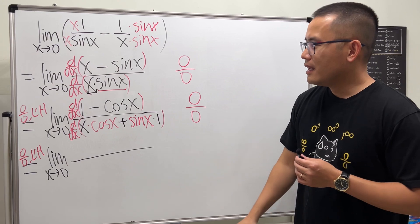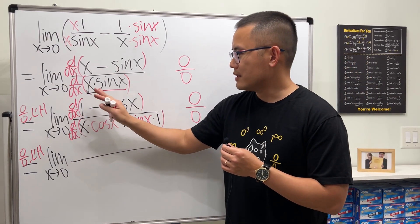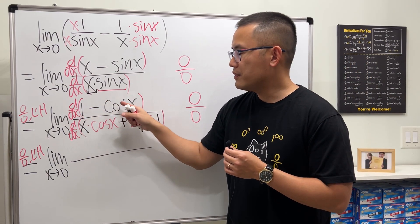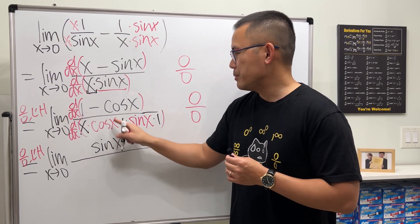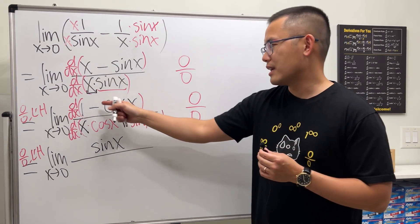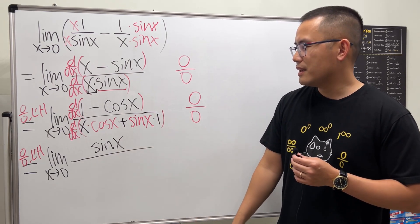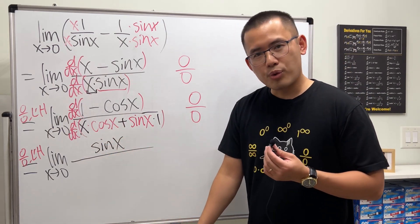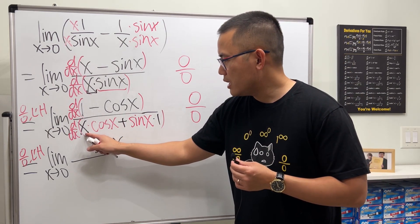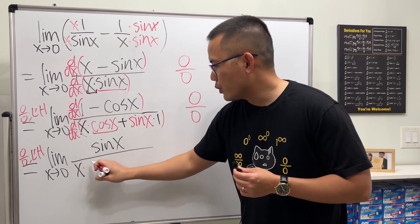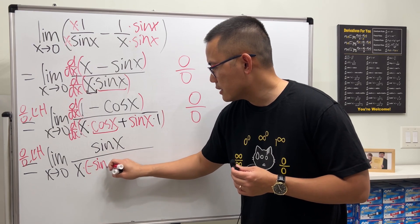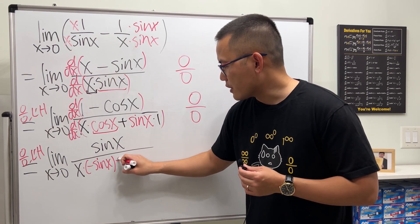Okay, the derivative of one is zero, the derivative of negative cosine will be positive sine, because the derivative of cosine is negative sine times that negative gives us positive. Now for this product rule again, I'm going to keep this function x and then multiply by the derivative of the second which will give us negative sin(x), plus the second function